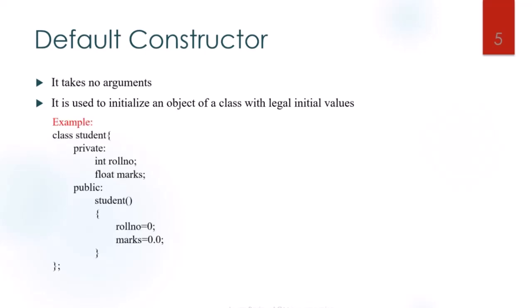Here is an example of the default constructor. We have created the class 'student', with data members declared as private. In the public section, the constructor is defined such that the data members are initialized to zero. This is called the default constructor.